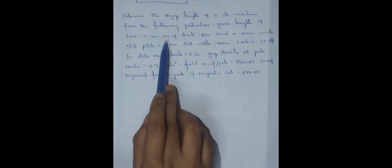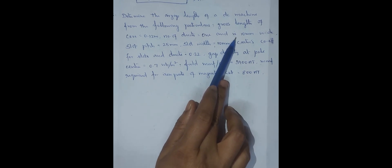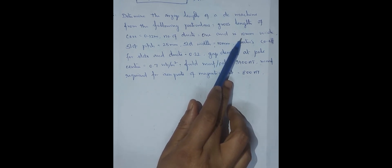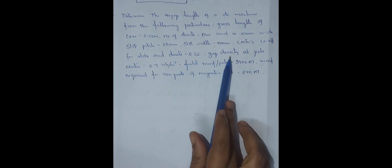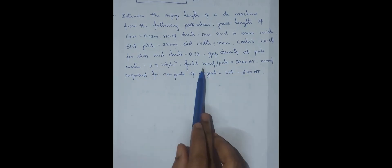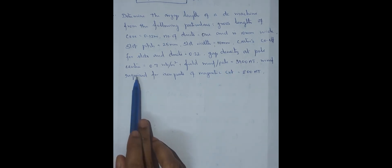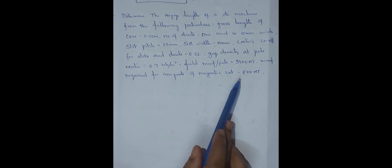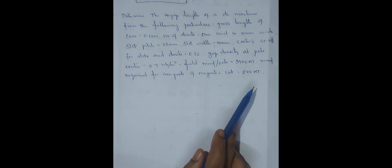The gross length is given, and the number of ducts is given with a width of 10 mm. Slot pitch and Carter's coefficient for slots and ducts are both the same. The gap density at the pole center in Weber per meter square is the flux density. Field MMF per pole is some value, and the MMF for iron parts of the magnetic circuit is given as 800 ampere turns. We have to find out the length of the air gap.